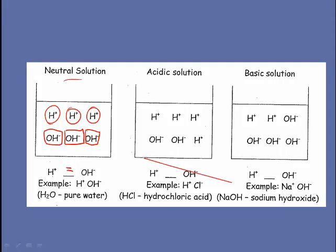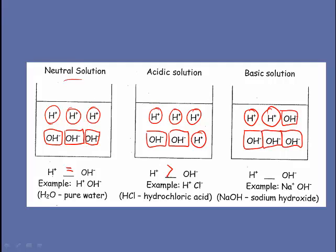In an acidic solution, you'll notice that you have more hydrogen ions than hydroxide ions. The more hydrogen ions there are, the more acidic the solution will become. Finally, in a basic solution, you'll see that the number of hydrogen ions relative to the number of hydroxide ions is actually quite low. We have more hydroxide ions than hydrogen ions. This would be the case with any kind of a base such as sodium hydroxide.